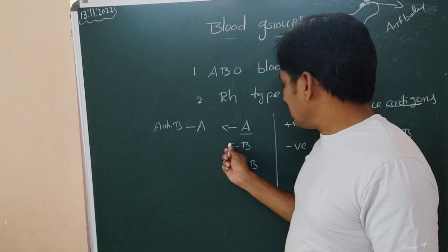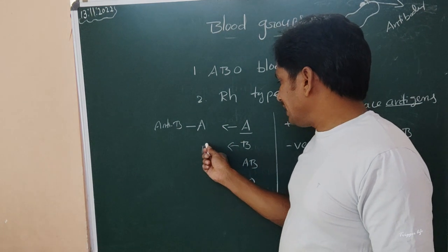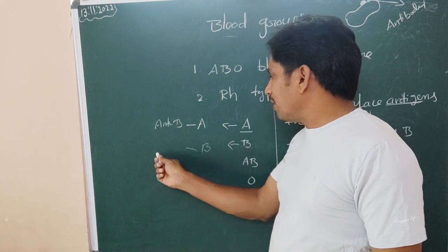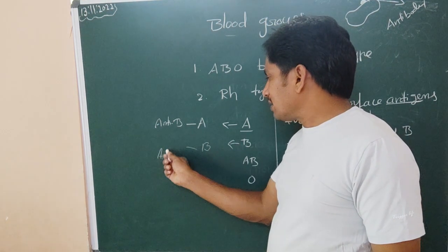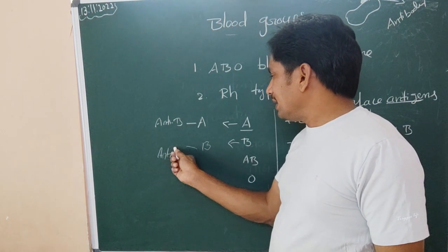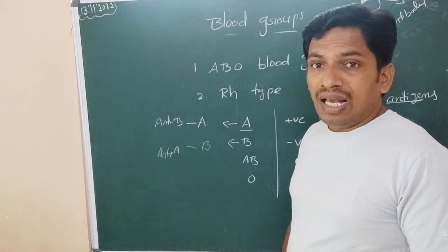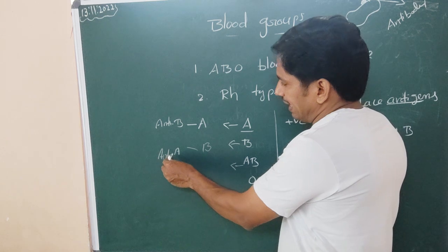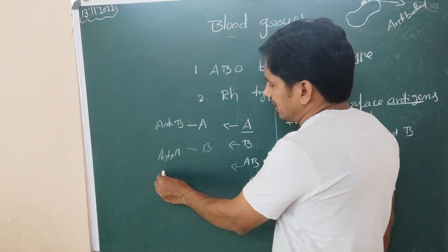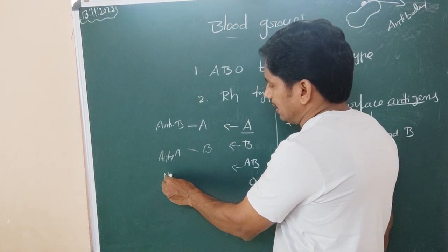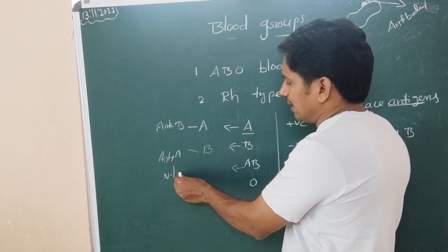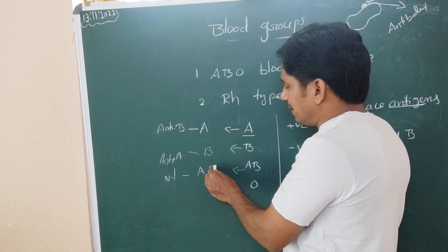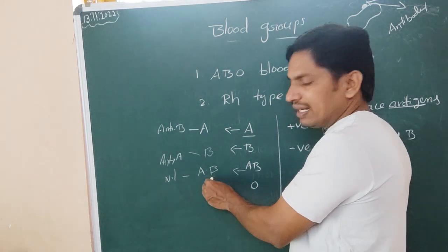If a person is B group, they have antigen B on the RBC surface, and the antibody in the plasma is anti-A. For AB group people, antibodies are absent in the plasma, but on the RBC surface they possess both antigen A and antigen B.